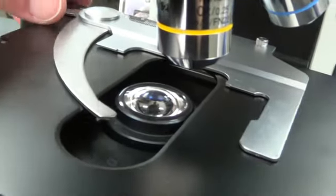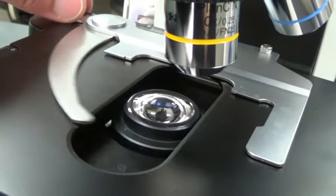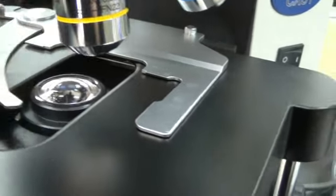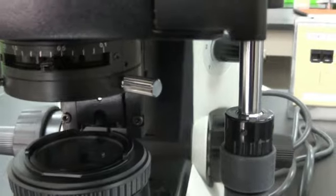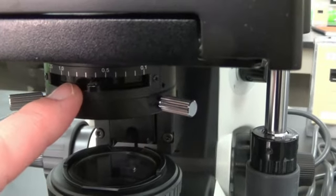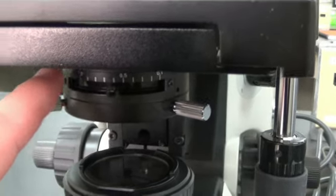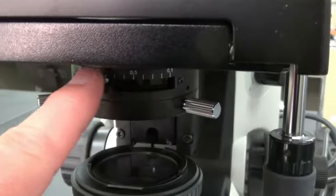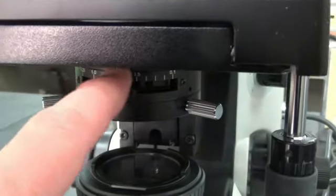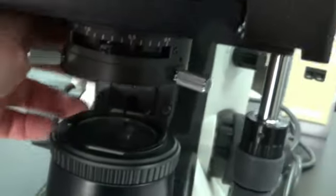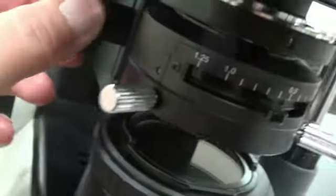Stage. Stage clip. This is how you open and close the stage clip, right there. Under the stage here is called a condenser. It has an iris diaphragm, and you can open and close it right here to let in the amount of light. You can raise and lower it with this knob here.